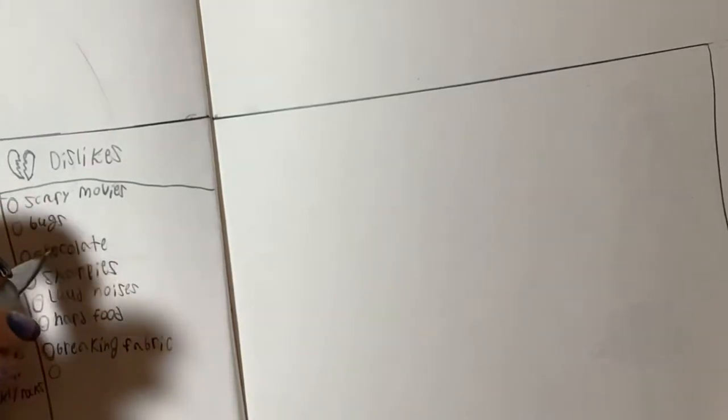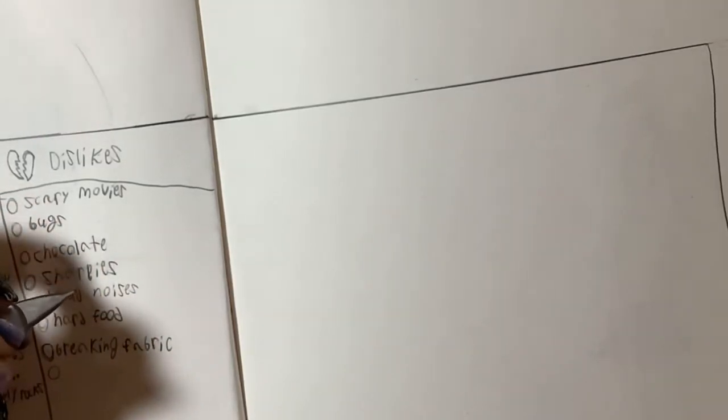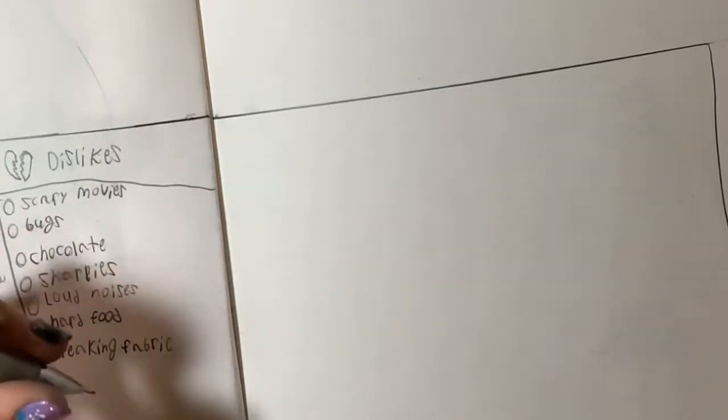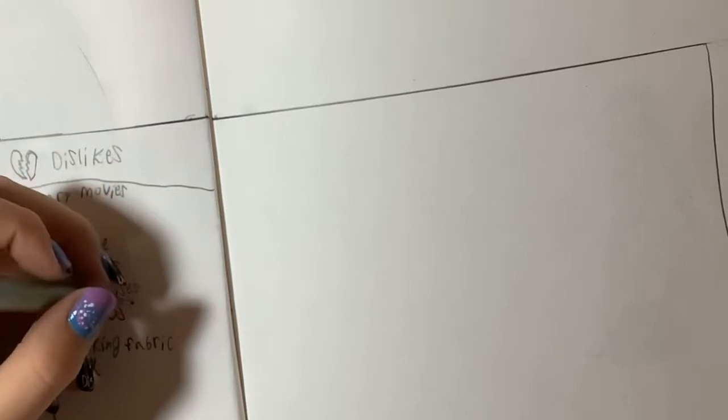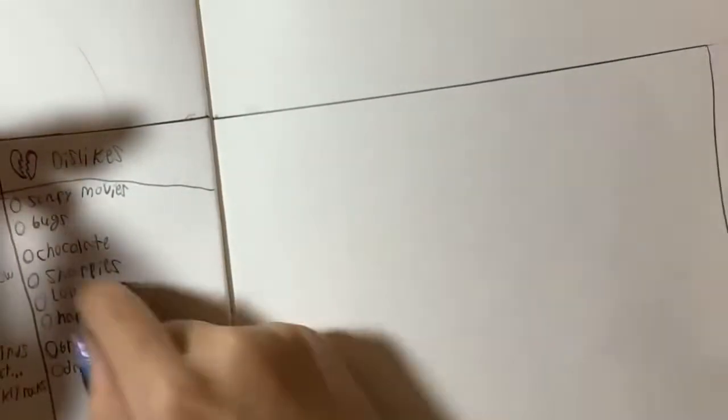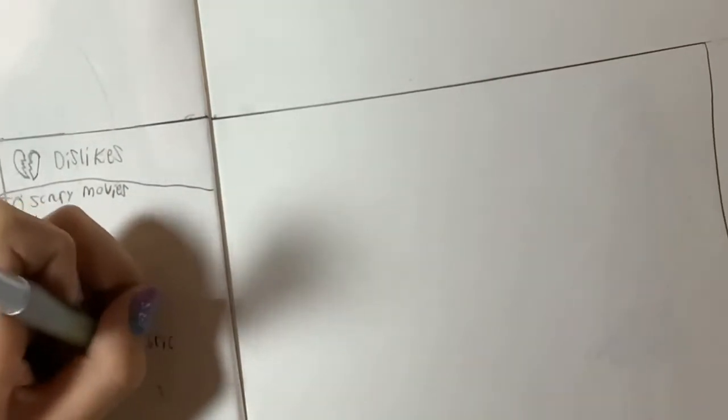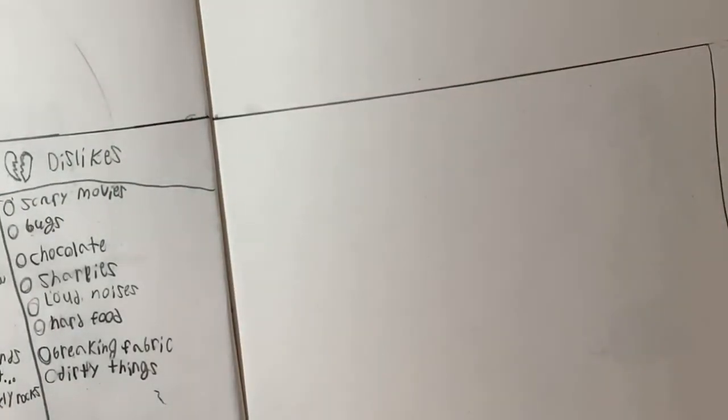One more thing and then we'll be done with our dislikes. So no more saying what I don't like. Okay, one last thing, and that is I don't like dirty things. I am a very organized person, so yeah.